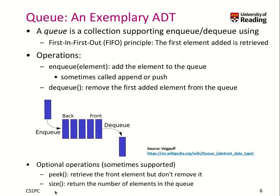A queue is an exemplary ADT. It is a collection supporting enqueue and dequeue of items, following a first-in, first-out principle — meaning the first element you add is retrieved first. We can enqueue elements one after another, and when you dequeue from the queue, you always get the first enqueued element.